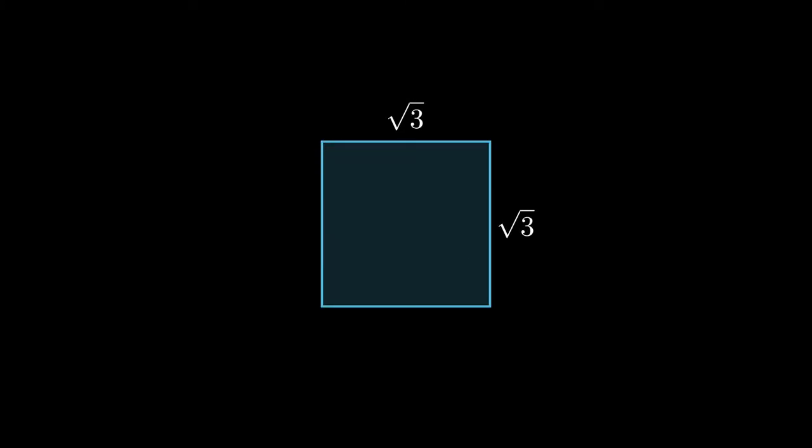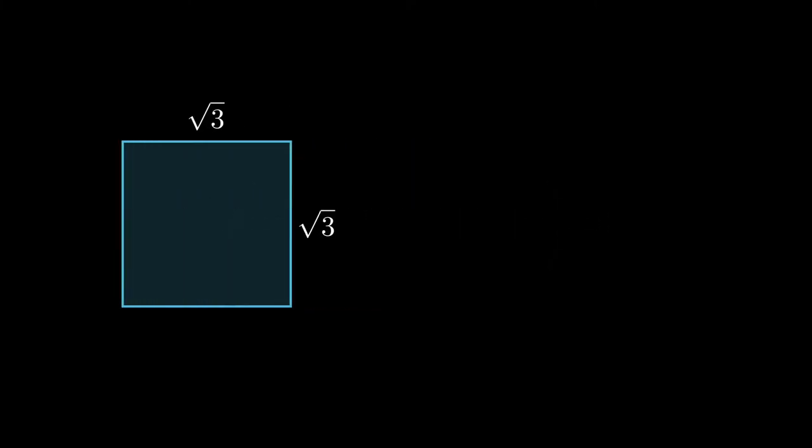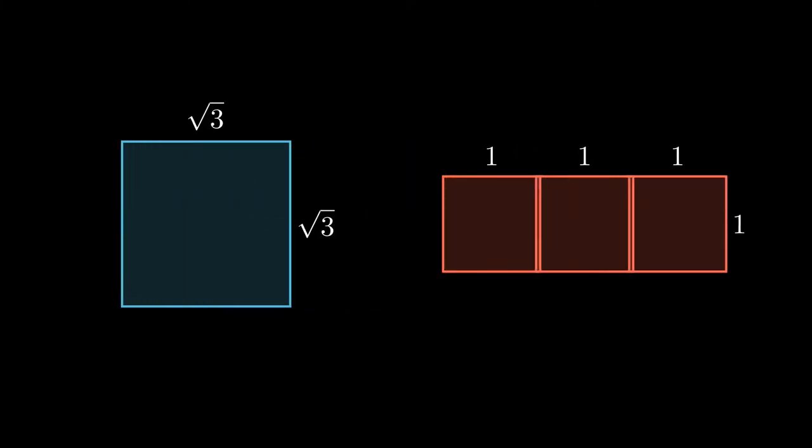Let's try this with a root three by root three square. Its area is root three squared, which is three. I can put three unit squares next to each other and get a three by one rectangle. The challenge is how do I cut up this square to build that three by one rectangle? They've got the same area, so how do I dissect one and get the other?